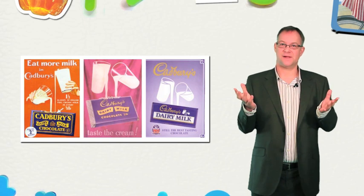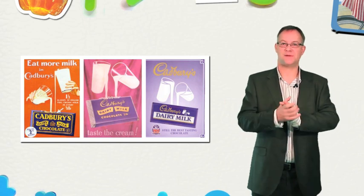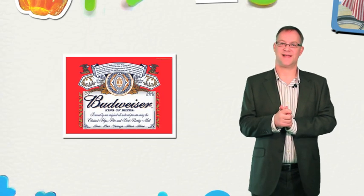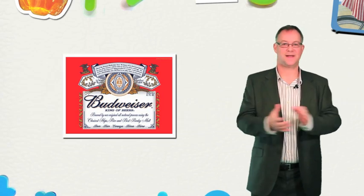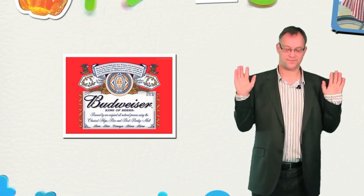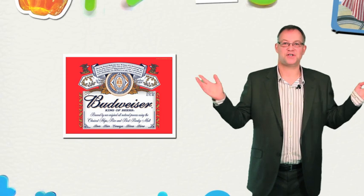Cadbury's cup and a half of milk has been poured into the dairy milk chocolate bar for 70 years. The Budweiser label is almost identical to the label of 1870. Easily identifiable when you're three lanes back at the bar, omnipresent in every fridge in the country.